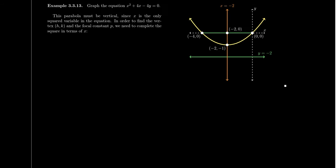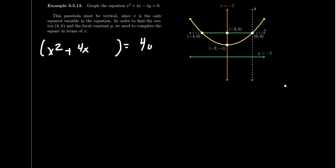Let's look at an example. Consider the parabola x² + 4x − 4y = 0. Because we have an x², the axis of symmetry is going to be vertical — we have a vertical parabola because only x is squared. To determine the vertex and the focal constant P, we need to complete the square. We separate the x terms from the y terms and move 4y to the right side. Take half of 4, which is 2, then square that to get 4, and add 4 to both sides.